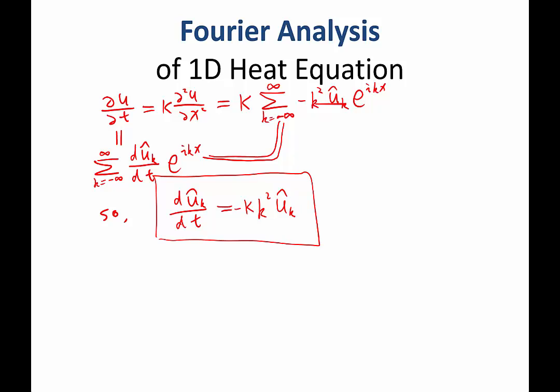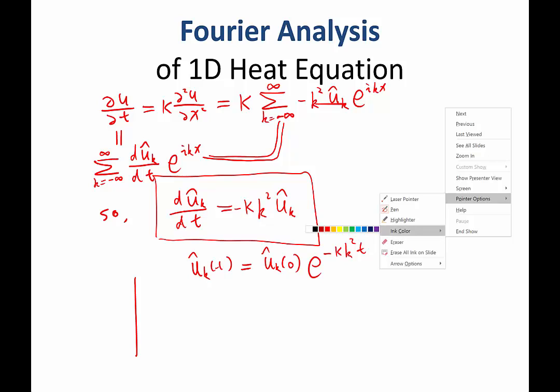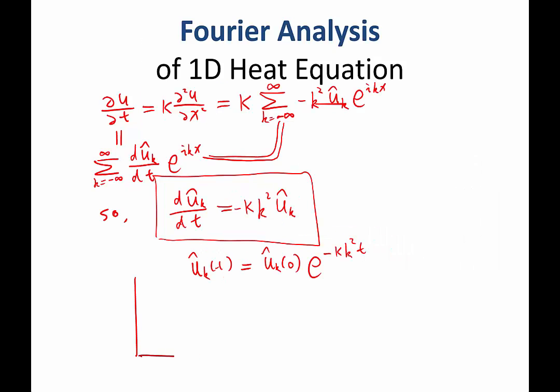It's an exponential function, exactly. So u hat of k as a function of t equals u hat of k at time zero, whatever it is, times exponential of minus kappa k square t. The behavior of this function, let me go back. The behavior of this function is going to be like that.